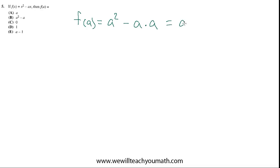a times a is a squared, so we have a squared minus a squared, which is zero, and that's always going to be true, so it's c.